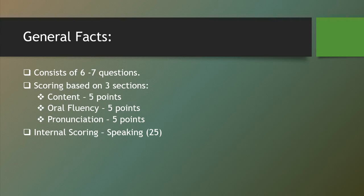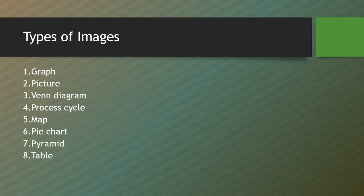I will give you some examples of how this exercise works. There are different categories of images that you will be getting. Sometimes you will get a graph, a picture, or diagrams like Venn diagrams, maps, pie charts, tables, pyramids, or process cycles. These are the few repeated types of images that come in the PTE examination, so you can have a rough idea of what all types of images will appear.